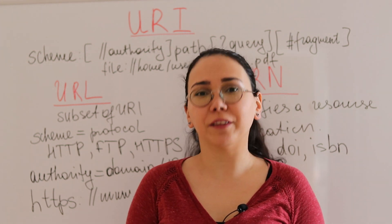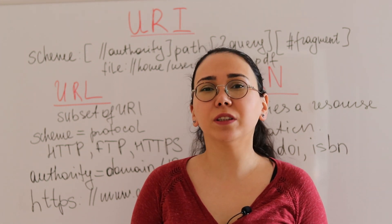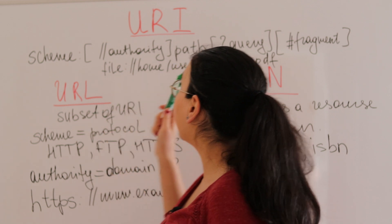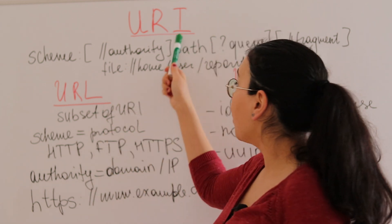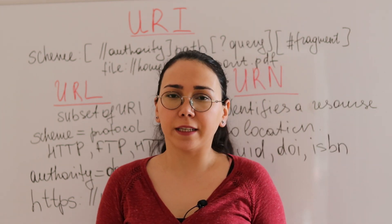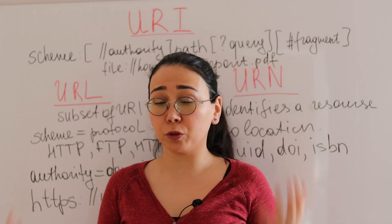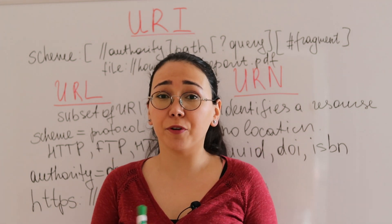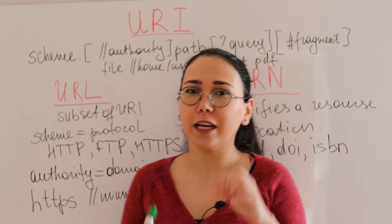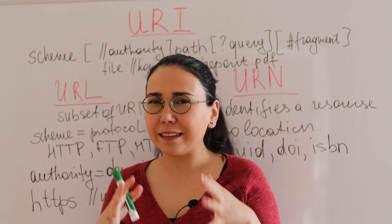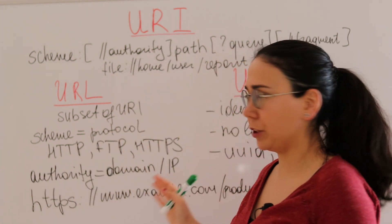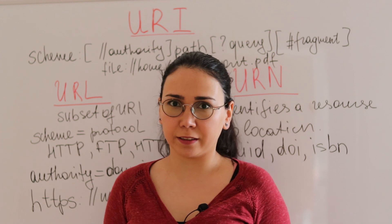URI, URN, and URL. What's the difference between these definitions? I often hear URI and URL being used interchangeably. Most of the time we refer to them as links or URLs especially, but in reality, what's the difference between these three definitions? Let's dive into it.